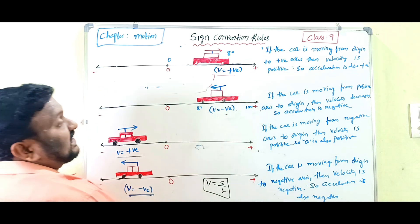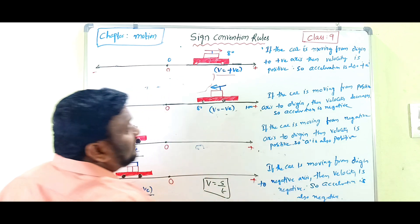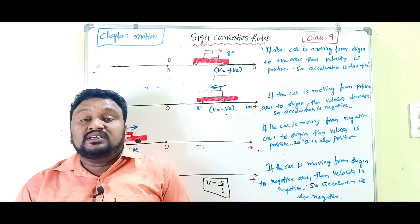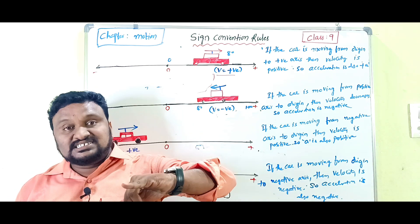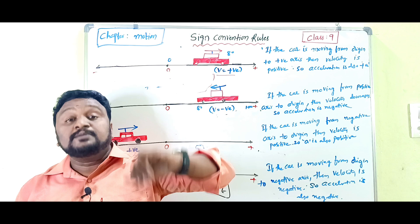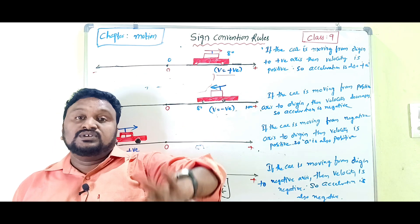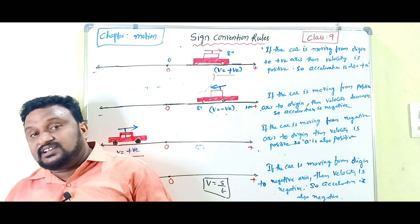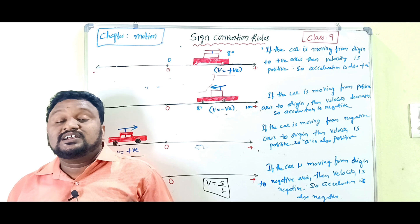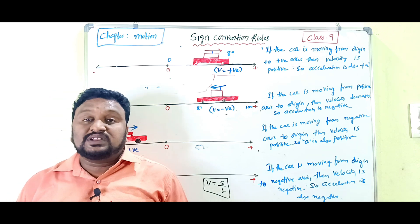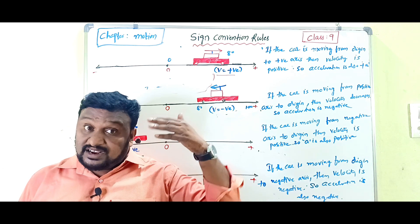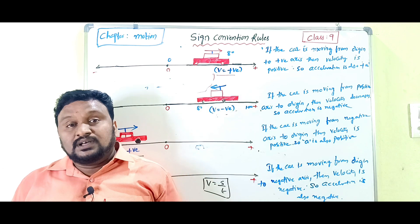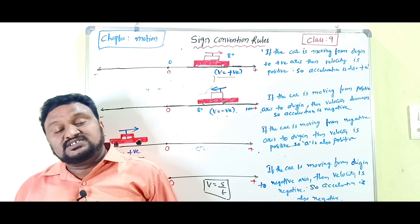So children, these are the sign convention rules. This is about sign convention rules for displacement, velocity, and acceleration. We consider directions because displacement, velocity, and acceleration are all vectors. If you understood this topic, please like, share, and comment on the video, and share with your friends from other schools as well. Thank you.